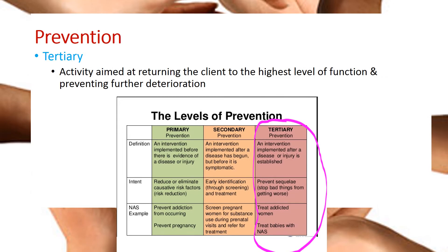Tertiary prevention is activity aimed at returning the client to their highest level of function and preventing further deterioration. For example, if somebody had a stroke because they could not afford their hypertension medication, tertiary prevention measures would prevent the stroke from happening again by making sure the patient has their medications, is taking them, and can afford them. Tertiary prevention deals with avoiding further decline and complications for a known health problem.